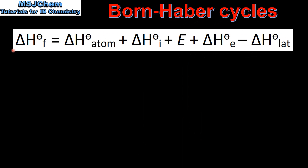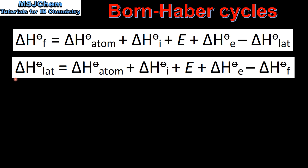The standard enthalpy change of formation of a solid ionic compound can be calculated using this equation. The standard enthalpy change of formation equals the standard enthalpy change of atomization plus the ionization energy plus the bond dissociation enthalpy plus the first electron affinity minus the lattice enthalpy. We can rearrange to solve for the lattice enthalpy: lattice enthalpy equals atomization plus ionization energy plus bond dissociation enthalpy plus first electron affinity minus the standard enthalpy change of formation.